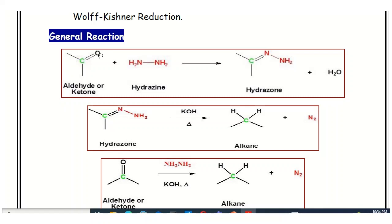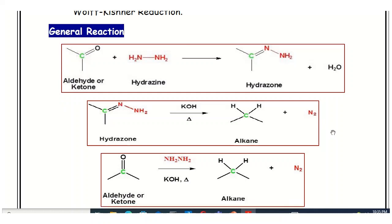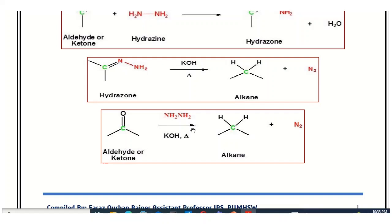In the next step, the hydrazone reacts in the presence of the base — potassium hydroxide — which causes reduction of the carbon-nitrogen double bond and converts it into the alkane. A nitrogen-nitrogen triple bond forms, and nitrogen gas is released as a byproduct of this chemical reaction. This is the general single-step representation of this reaction.